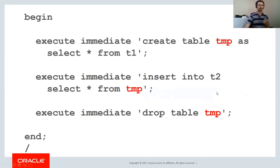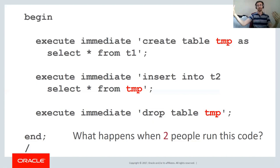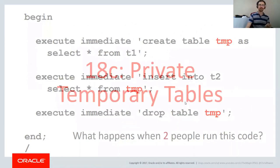There's another problem with creating and dropping tables on the fly: what happens if two people run the code at the same time? The first person creates the table; the second person gets an exception because the table already exists. Even with exception handling, both sessions could be reading and writing the same data — a lot of problems can occur. That is, until Oracle 18c, where something new was introduced that potentially makes creating tables within PL/SQL something you might want to do: private temporary tables.